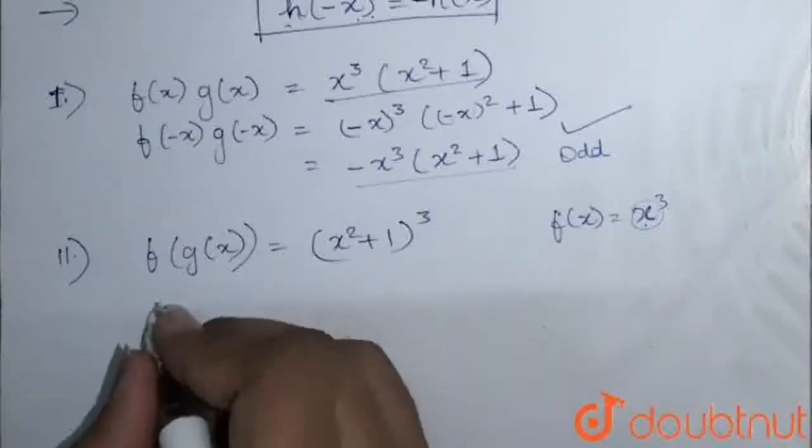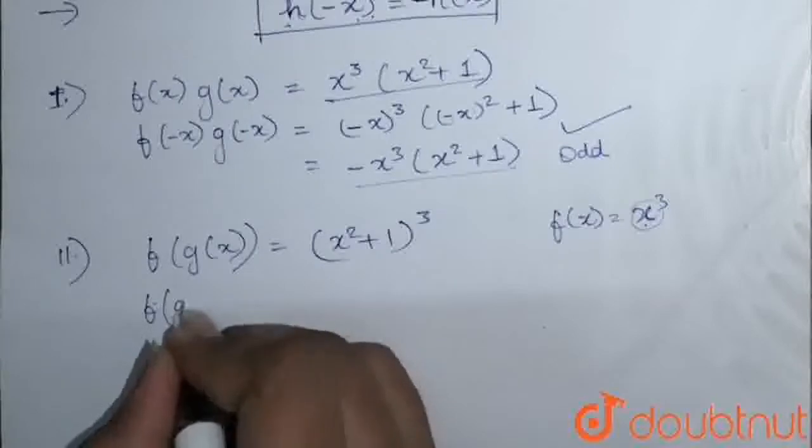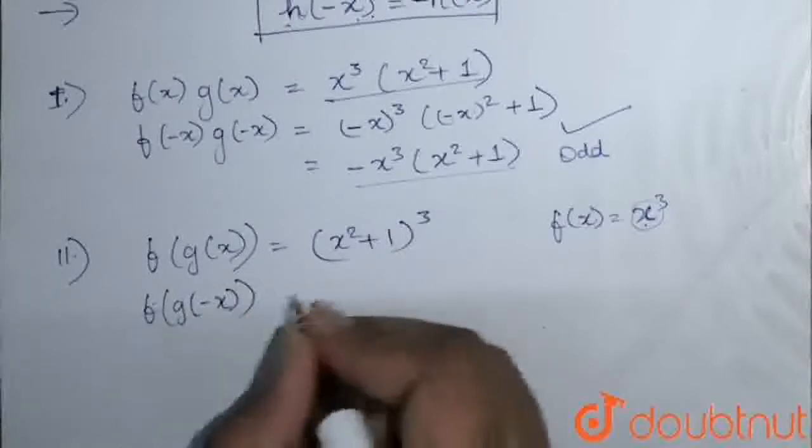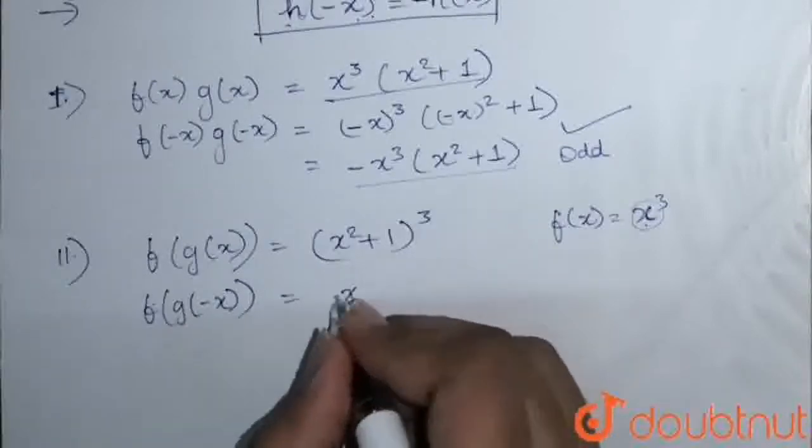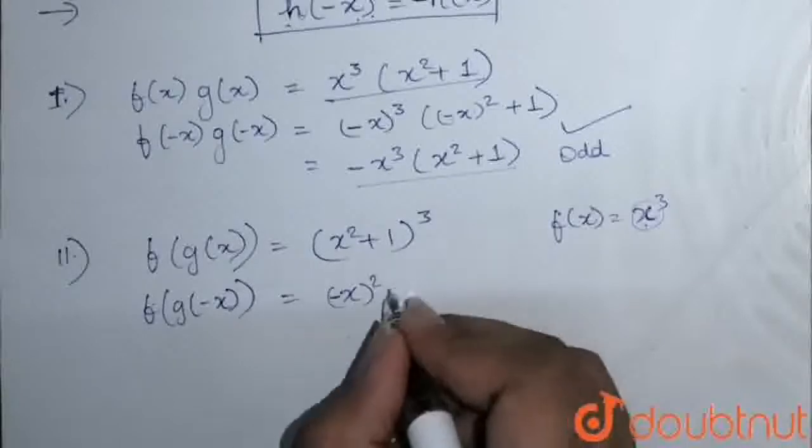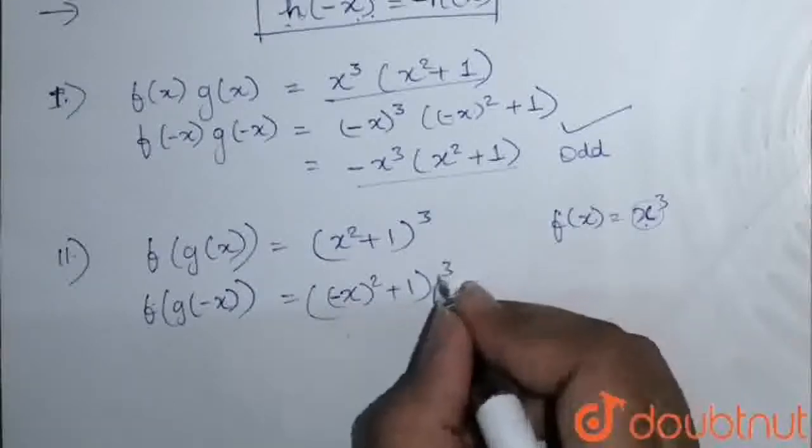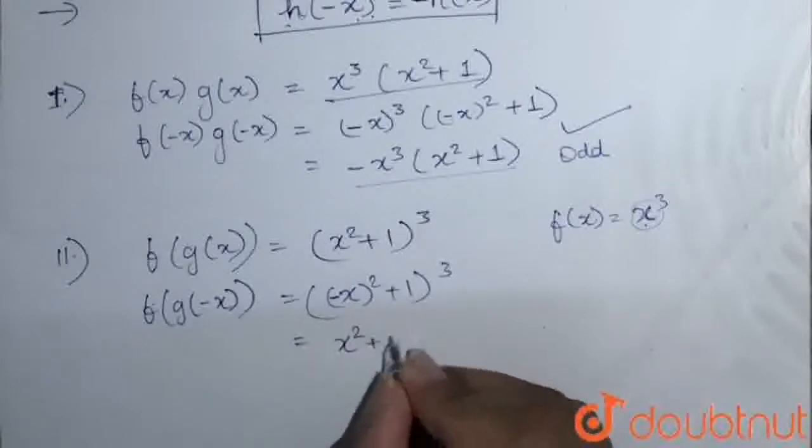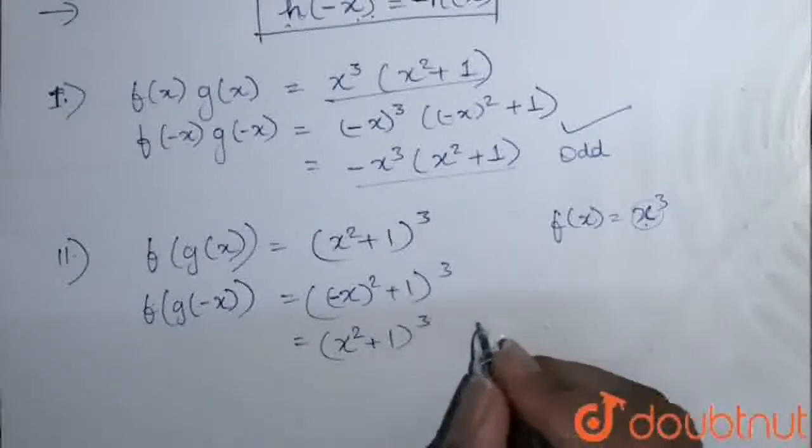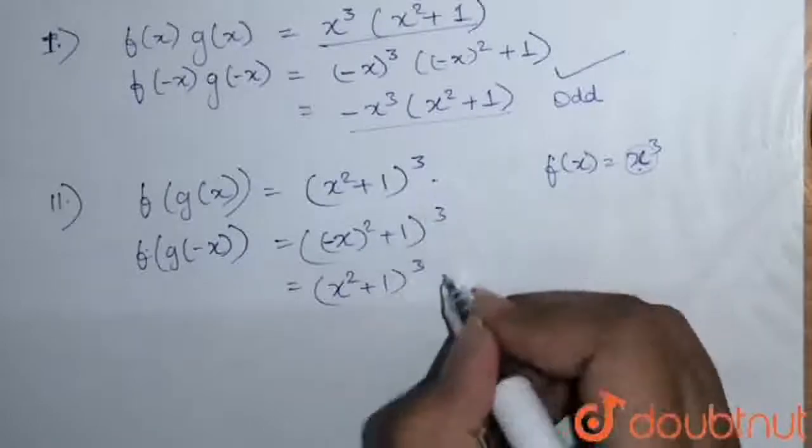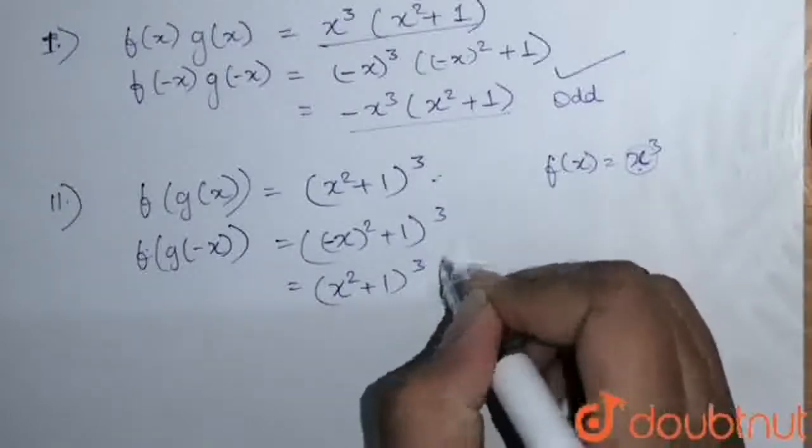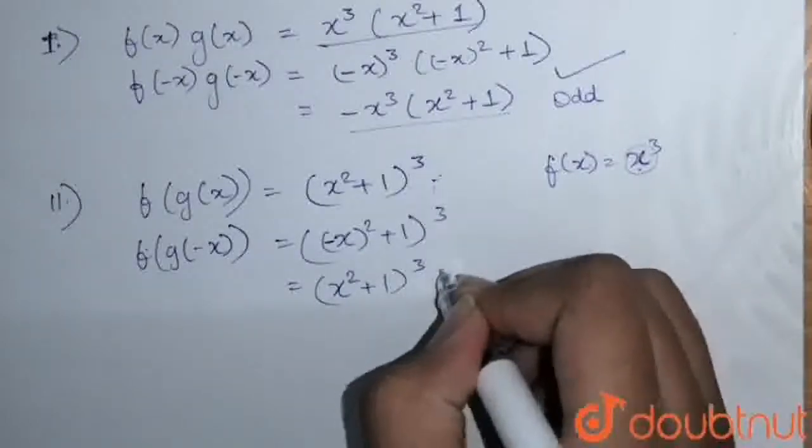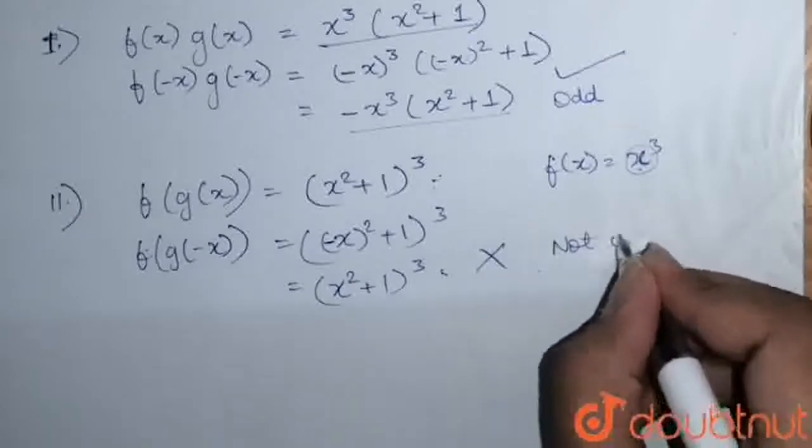Now, moving forward to f(g(-x)). That will be equal to ((-x)² + 1)³, which is equal to (x² + 1)³. Now, we can see that it is not negative of this. But they both are equal. So it is not an odd function.